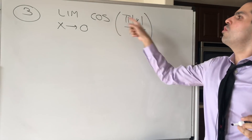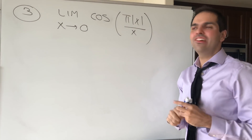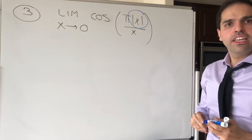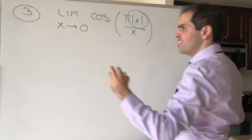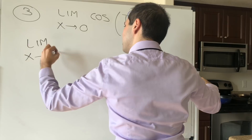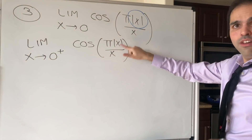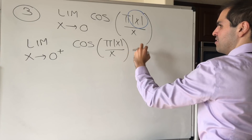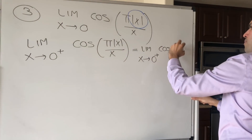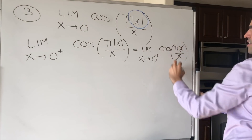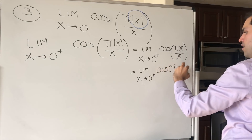Next: limit x→0 of cos(π·|x|/x). Do not ignore the absolute value — it is very important. Generally, if you see an absolute value, you have to do the left-hand and right-hand side limits. For the right-hand limit (x→0⁺): since x is positive, |x| = x, so it becomes cos(πx/x) = cos(π) = −1.